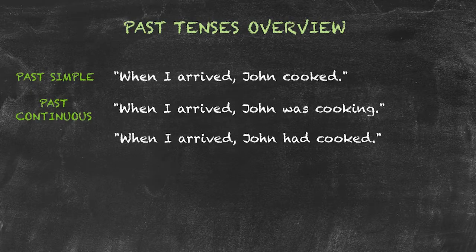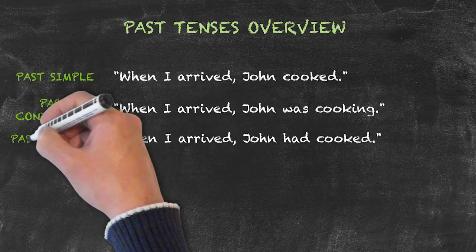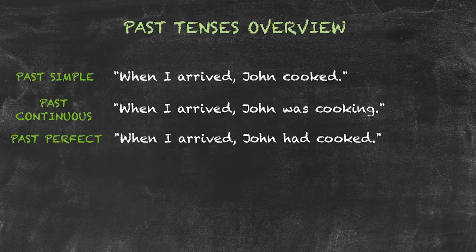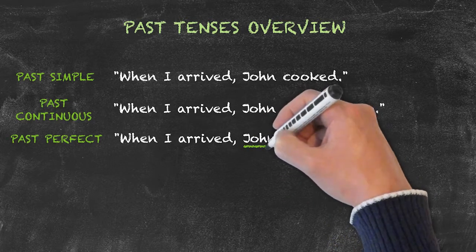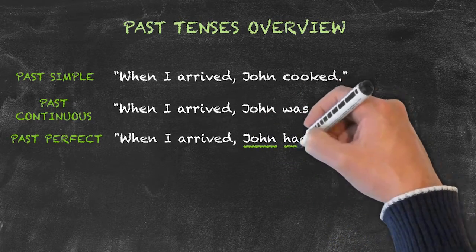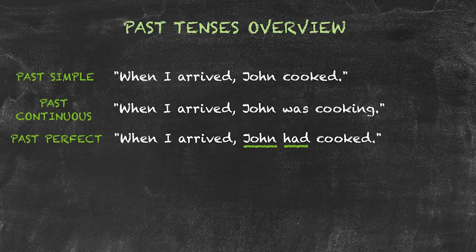In the third example, when I arrived, John had cooked. John had cooked is the past perfect tense. This has the structure: subject — here John — plus had, plus past participle — here cooked.